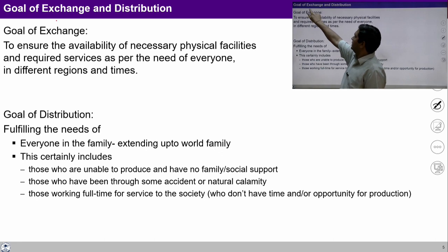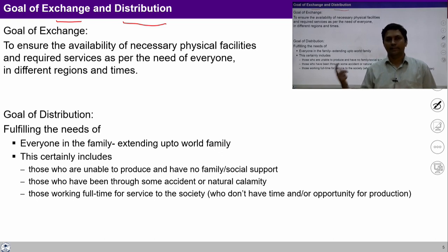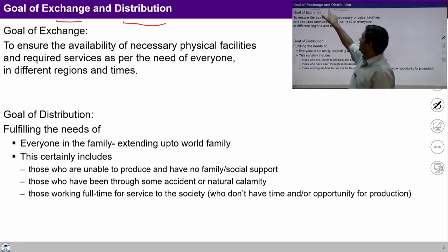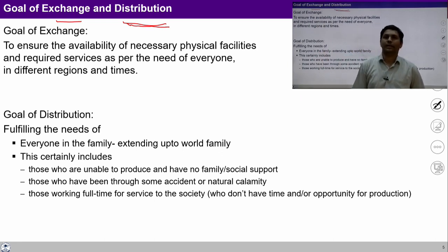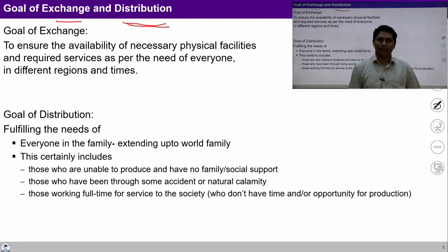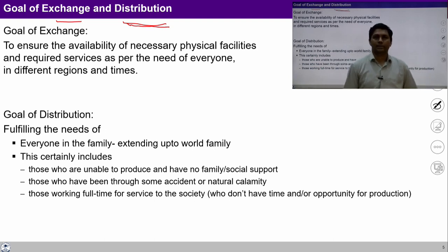If we see exchange and distribution, the basic difference is: when we distribute a thing, there is no need to return the physical facility — return is not expected in distribution. But when we exchange physical facilities, return is expected on both sides. Suppose I have wheat and I want rice from you — return on both sides is required. But when we are talking about distribution, there is no need to return anything.